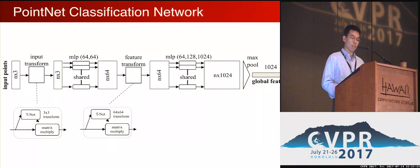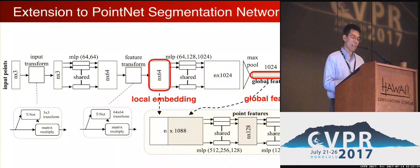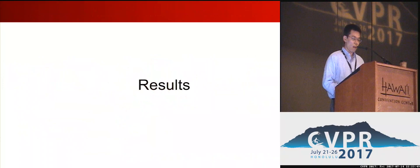So far, we have introduced our PointNet classification network. To extend this architecture to segmentation, we need to predict class scores for each point. A simple but effective way to do that is to concatenate local embeddings and the global feature vector. For each point, we concatenate the local embedding with the global feature vector and use that for per-point classification, finally outputting m scores for each point to do the segmentation.